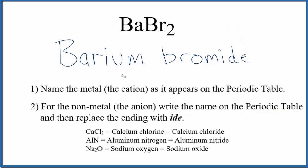That gives us the name barium bromide, and that is the name for BaBr₂. If you were given the name barium bromide and asked to write the formula, you'd know that barium is 2+ on the periodic table — it's in group 2.